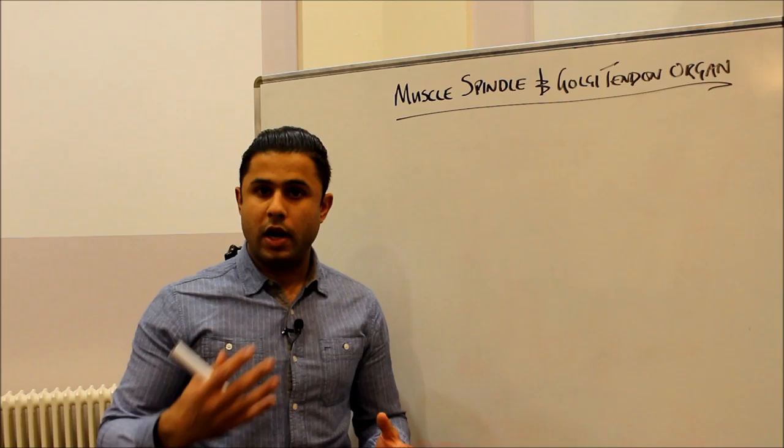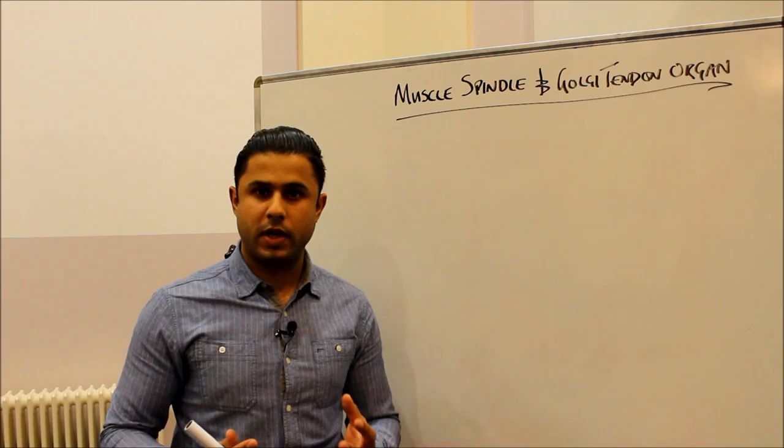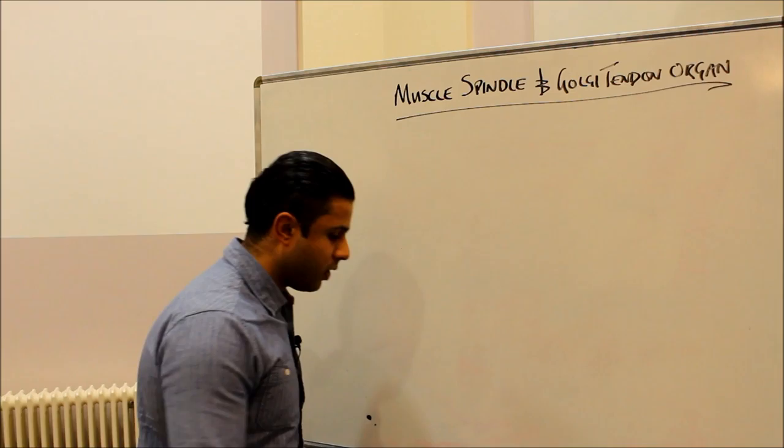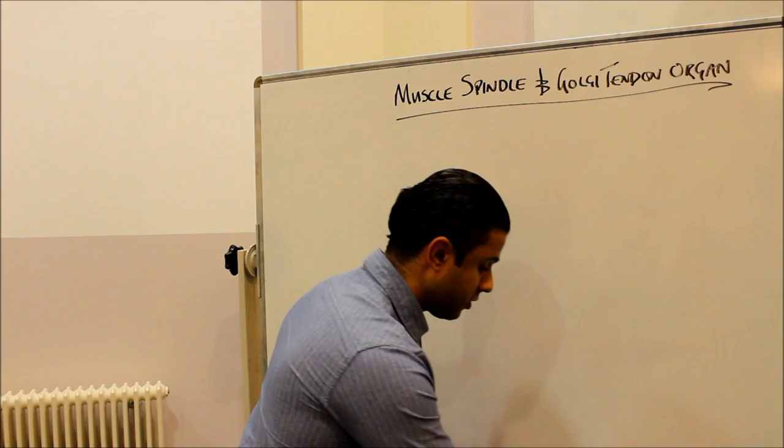Proprioception refers to our conscious understanding of our limb movement, our position in space, and the sensations and feelings that we get when performing a particular sporting movement. With that in mind, let's move on first to the muscle spindles.